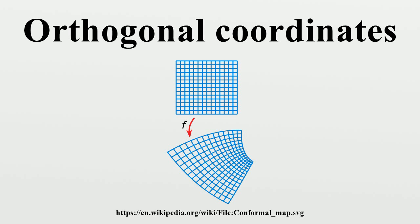A simple method for generating orthogonal coordinate systems in two dimensions is by a conformal mapping of a standard two-dimensional Cartesian grid. A complex number z equals x plus iy can be formed from the real coordinates x and y, where i represents the square root of minus one. Any holomorphic function w equals f with non-zero complex derivative will produce a conformal mapping. If the resulting complex number is written w equals u plus iv, then the curves of constant u and v intersect at right angles, just as the original lines of constant x and y did.